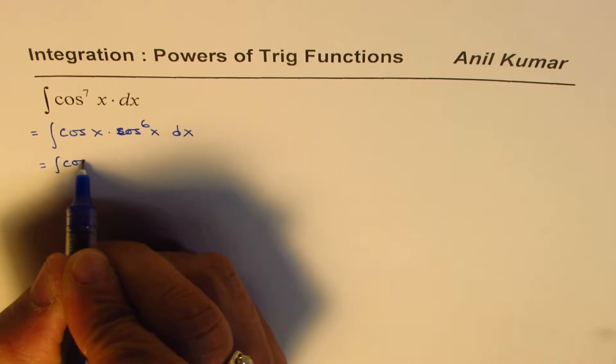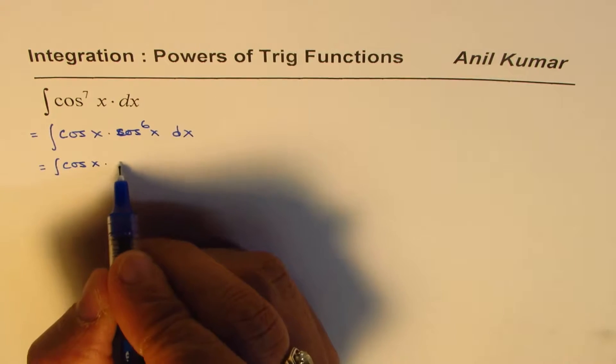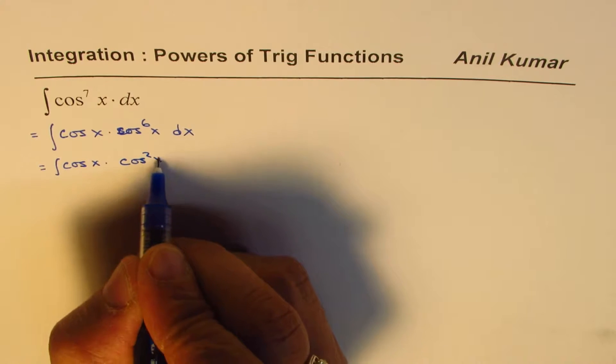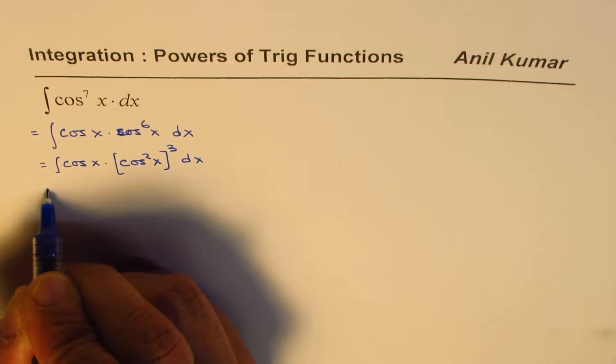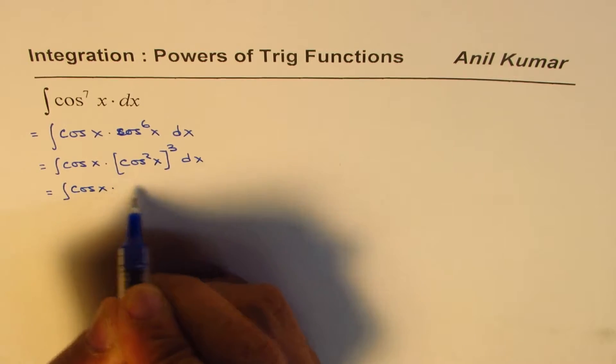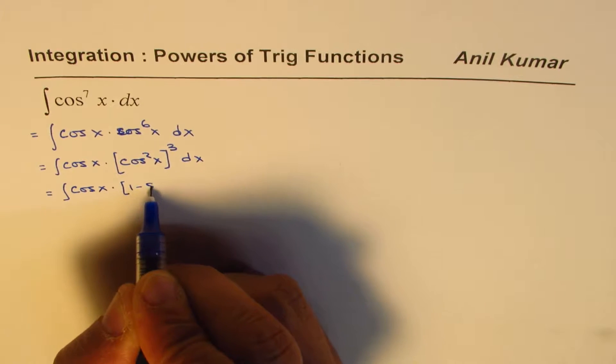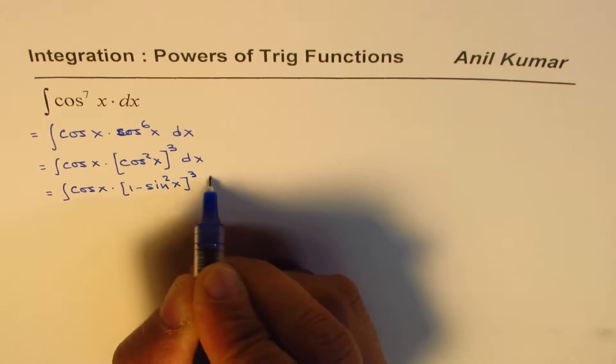Now, it could be written as cos x times cos 6 could be written as cos square x cube dx. Cos square x is 1 minus sine square x, right? So we could write this as 1 minus sine square x cube dx.